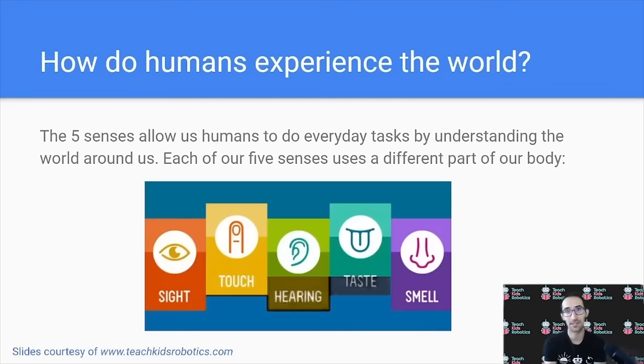When we're talking about how robots experience the world, let's first ask ourselves how do humans experience the world? The five senses allow us humans to do everyday tasks by understanding the world around us. Each of our five senses uses a different part of our body. For example, sight comes from our eyes, touch from our hands, hearing from our ears, taste from our mouth, and smell from our nose.